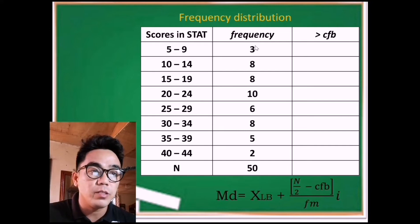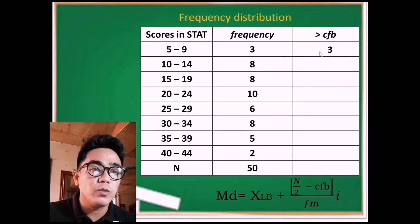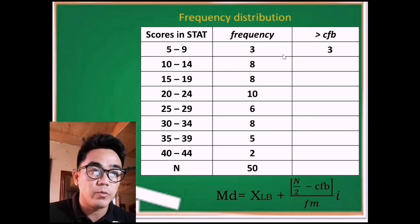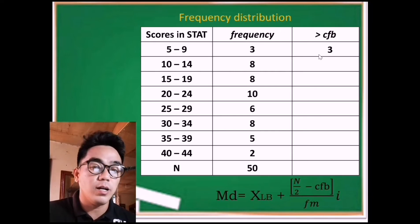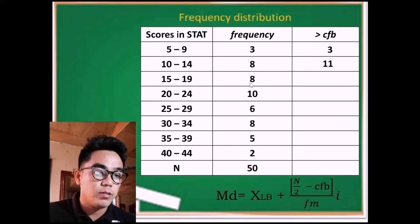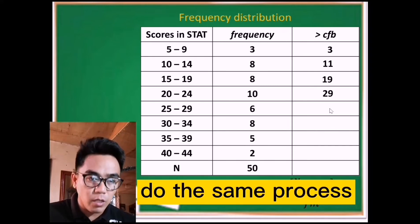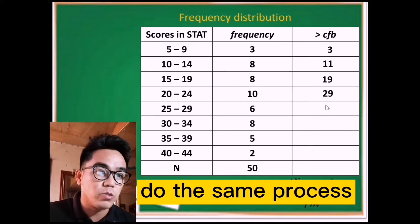The first row should be the first frequency value, which is 3, so bring down 3. For the less-than cumulative frequency we subtracted, but here we add. So the next row is 3 plus 8 equals 11, then 11 plus 8 equals 19, and 19 plus 10 equals 29. We do the same process to fill in the remaining rows.